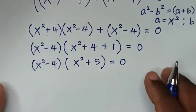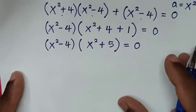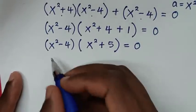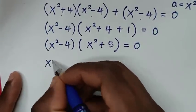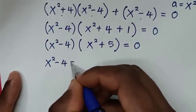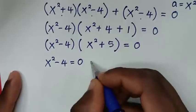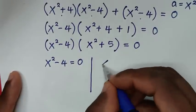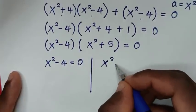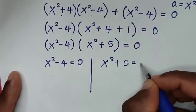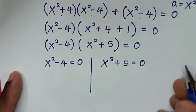From here we have two solutions: the first solution is x² - 4 = 0, and the second solution is x² + 5 = 0.